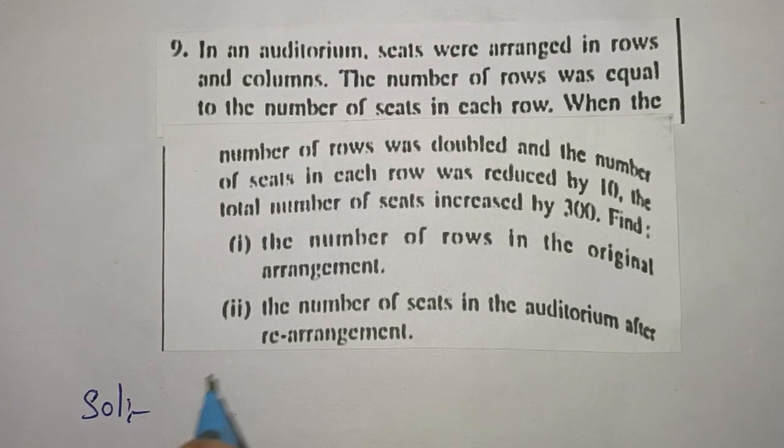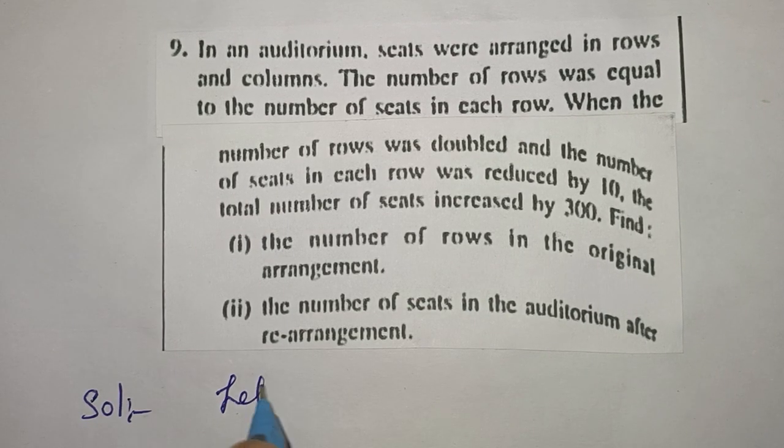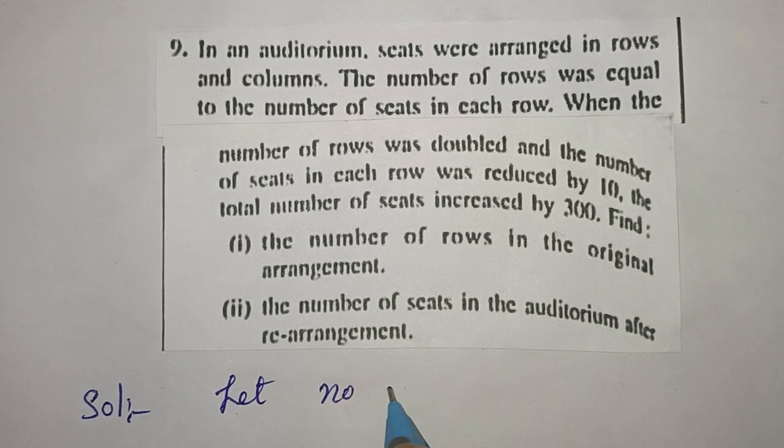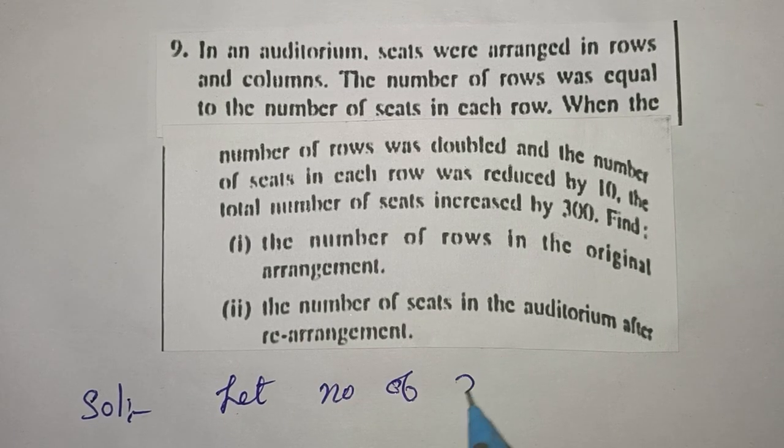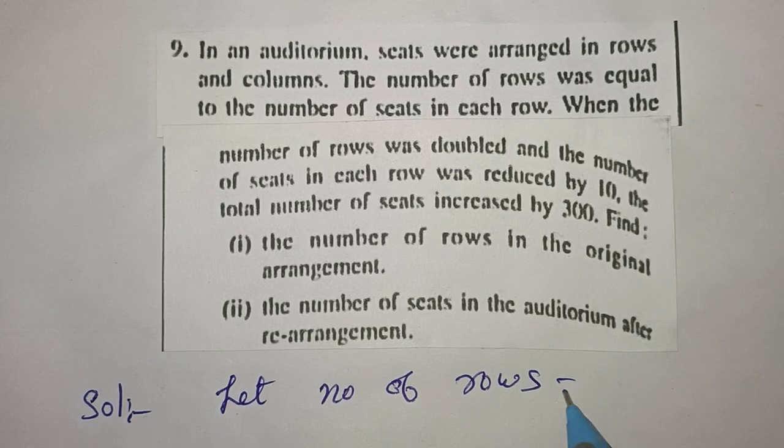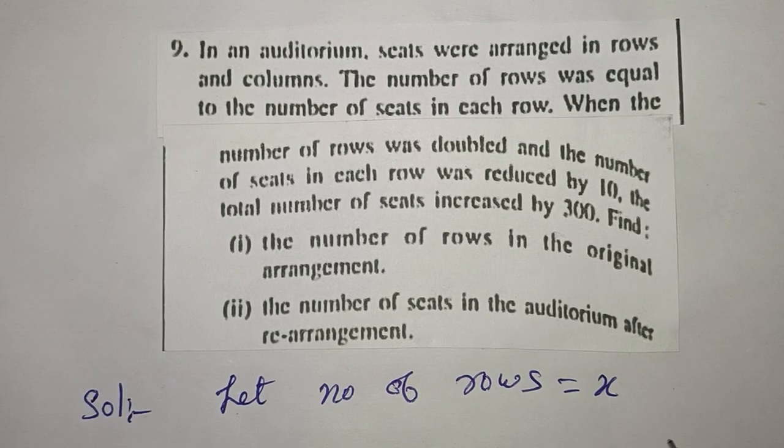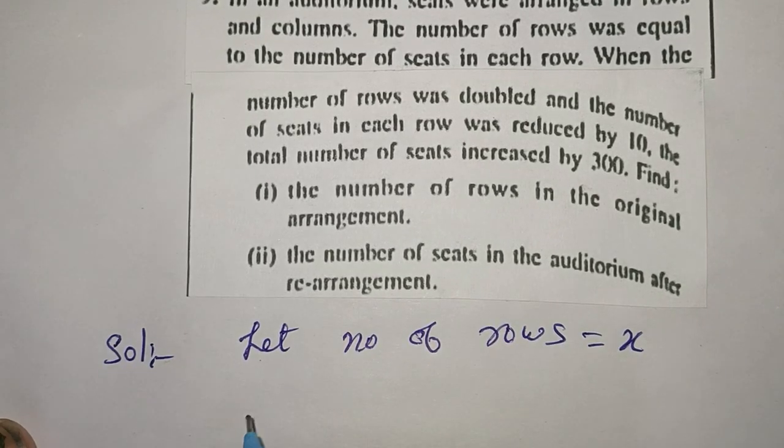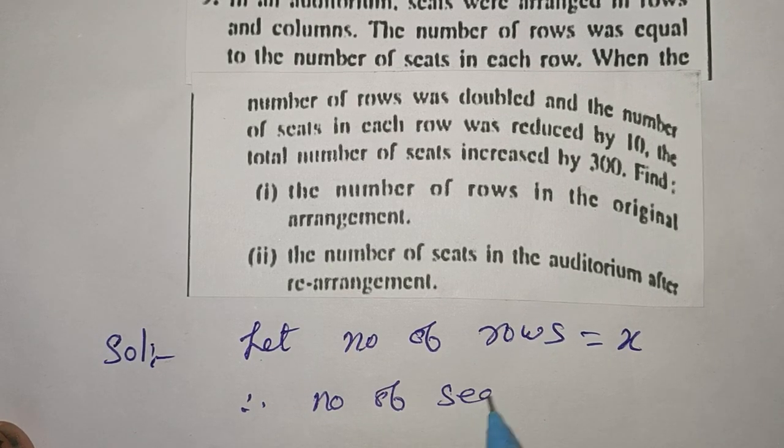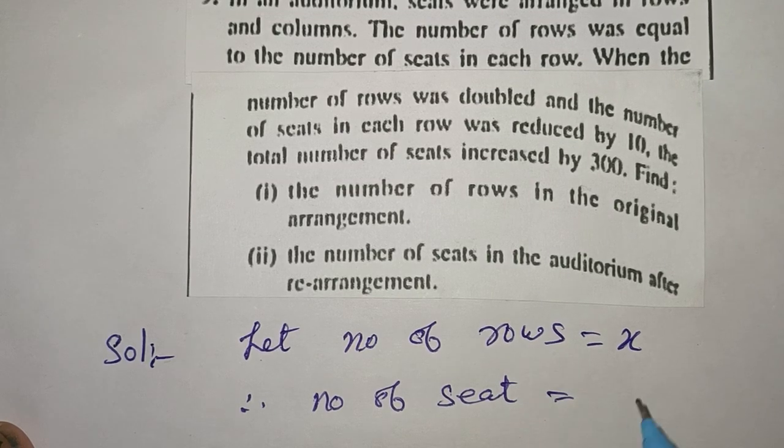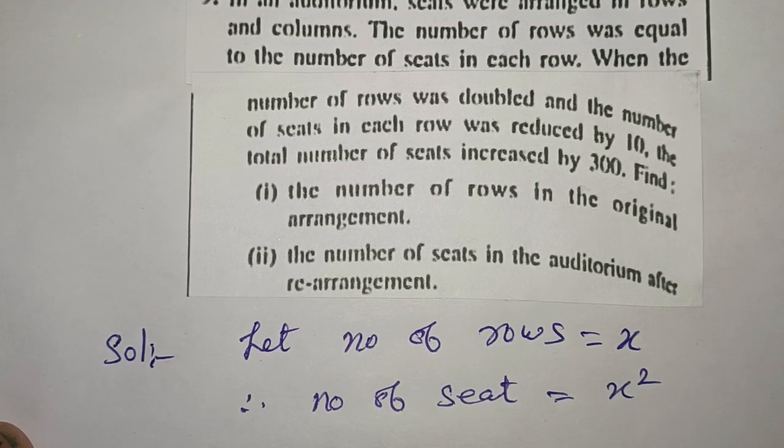Solution: let number of rows = x. Therefore, number of seats = x into x = x².